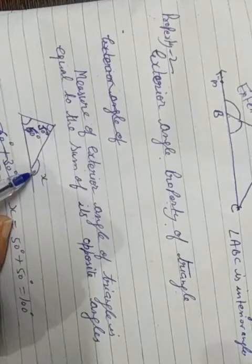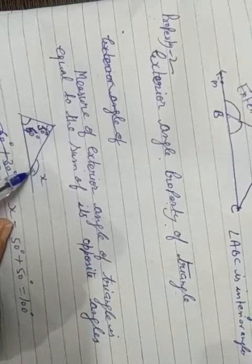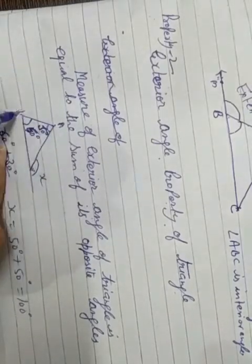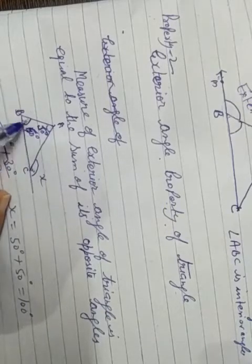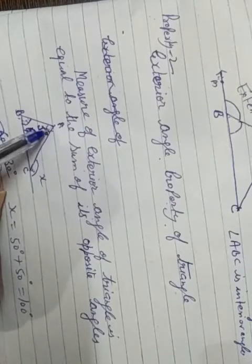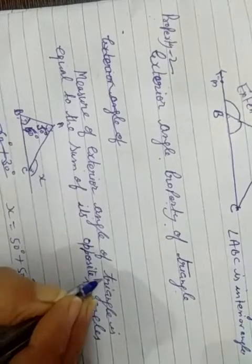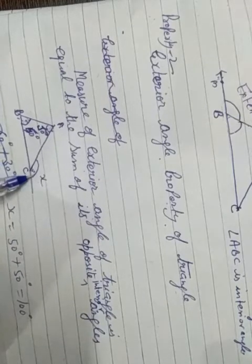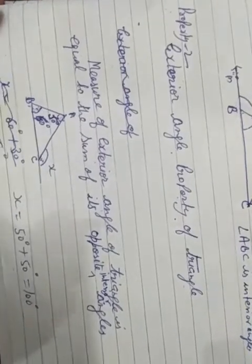Now, this is angle X and it is the exterior angle. To find the measurement of X, we look at its opposite angles. The opposite interior angles are A and B. So the sum of these two gives us: X is equal to 50 plus 50 degrees, which equals 100 degrees.